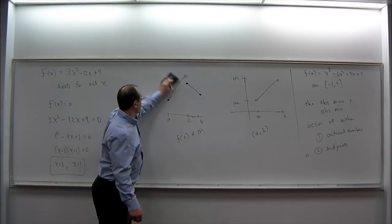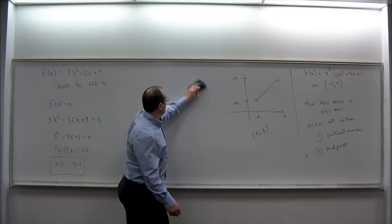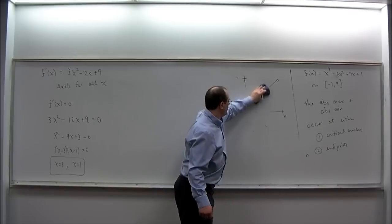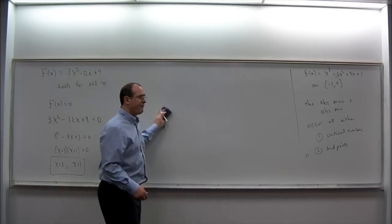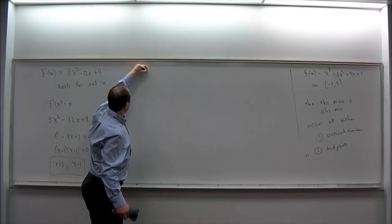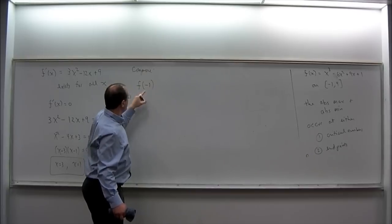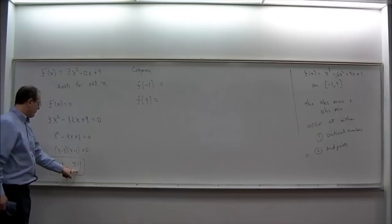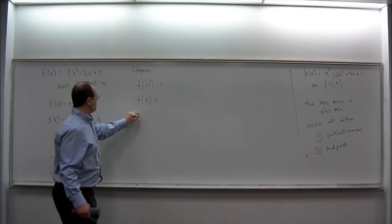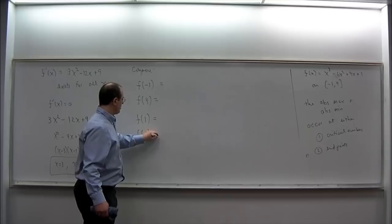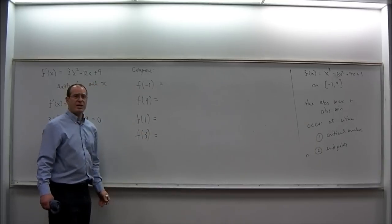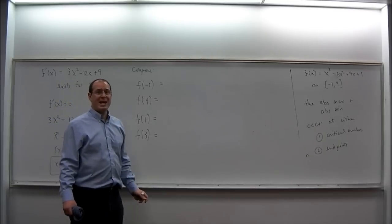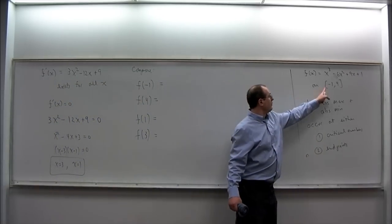The critical numbers are not necessarily the solutions to our problem — the max and min occur at either the critical numbers or the endpoints. So we have four candidates. We now have to compare function values: f at the left endpoint, f at the right endpoint, and f at the critical numbers — f(1) and f(3). Whichever value is biggest is the absolute maximum; whichever is smallest is the absolute minimum on the interval from negative 1 to 4.